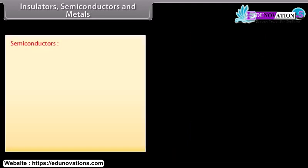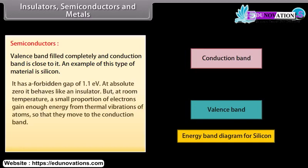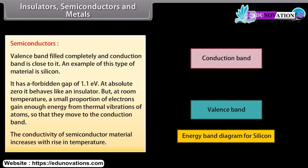For semiconductors, the valence band is filled completely and the conduction band is close to it. An example is silicon, which has a forbidden gap of 1.1 electron volts. At absolute zero it behaves like an insulator, but at room temperature a small proportion of electrons gain enough energy from thermal vibrations of atoms to move to the conduction band. The conductivity of semiconductor material increases with rise in temperature.